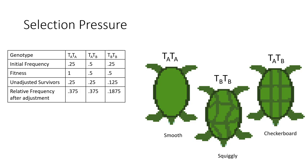Now, looking at these numbers, we can see that the smooth shelled increased in number quite a bit compared to the squiggly and checkerboard, who both lost numbers.